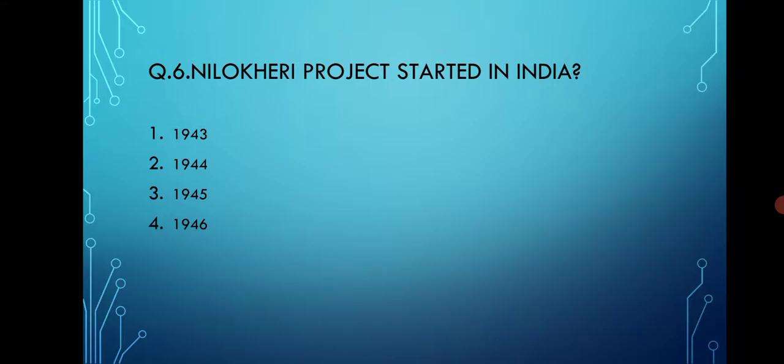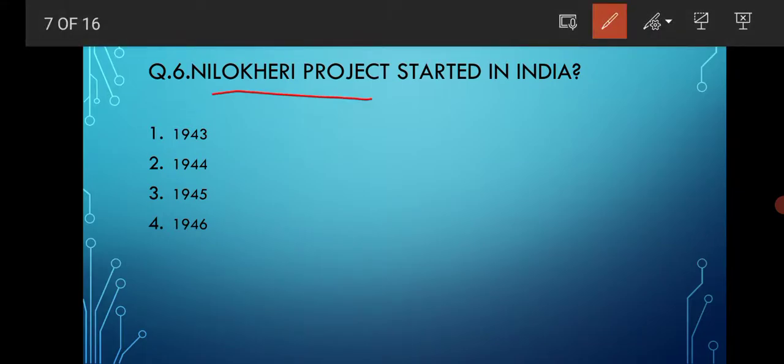When was the Nilokheri Project started in India? This is also an important project. Options are 1943, 1944, 1945, and 1946. The correct option is option number one, that is 1943.